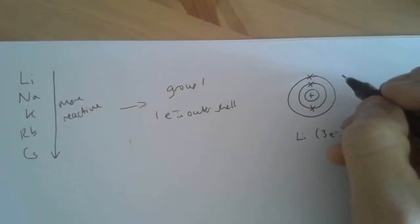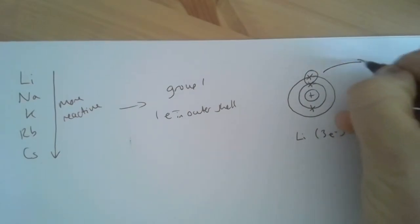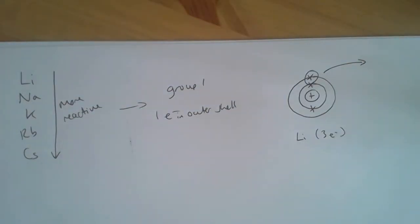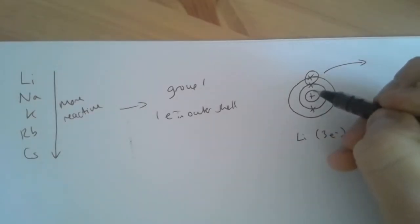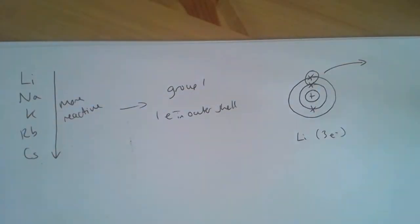When lithium reacts with nonmetals, that electron gets donated or given to the nonmetal and will ultimately help form an ionic bond. And it's how easy it is to remove this electron that determines reactivity.